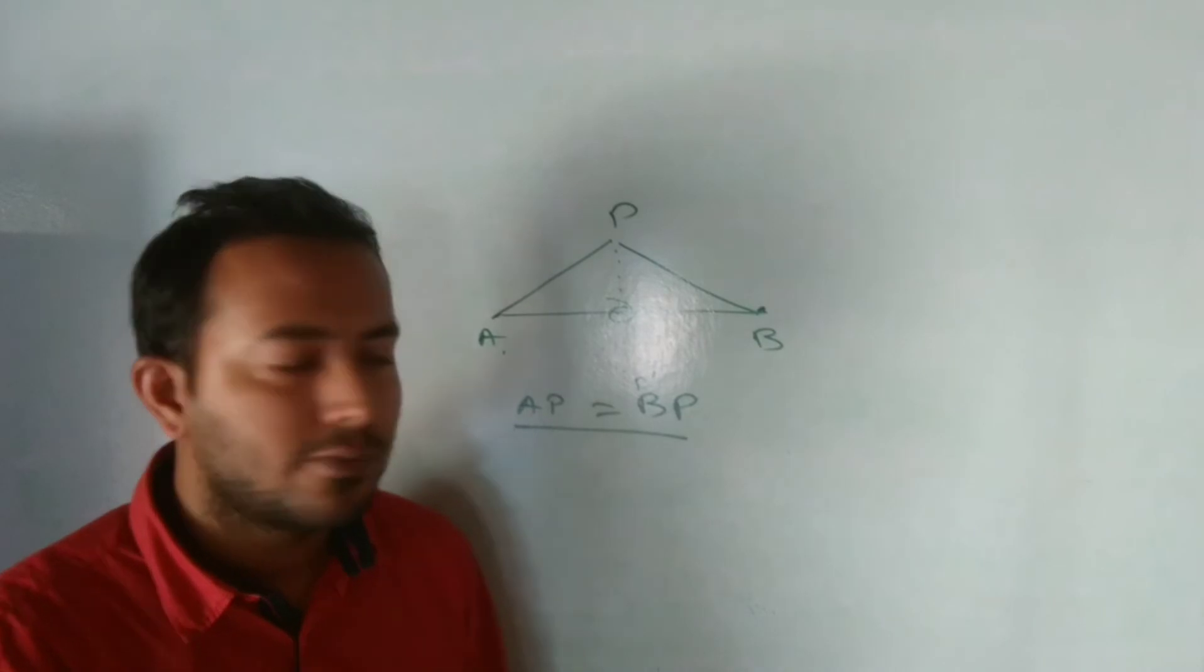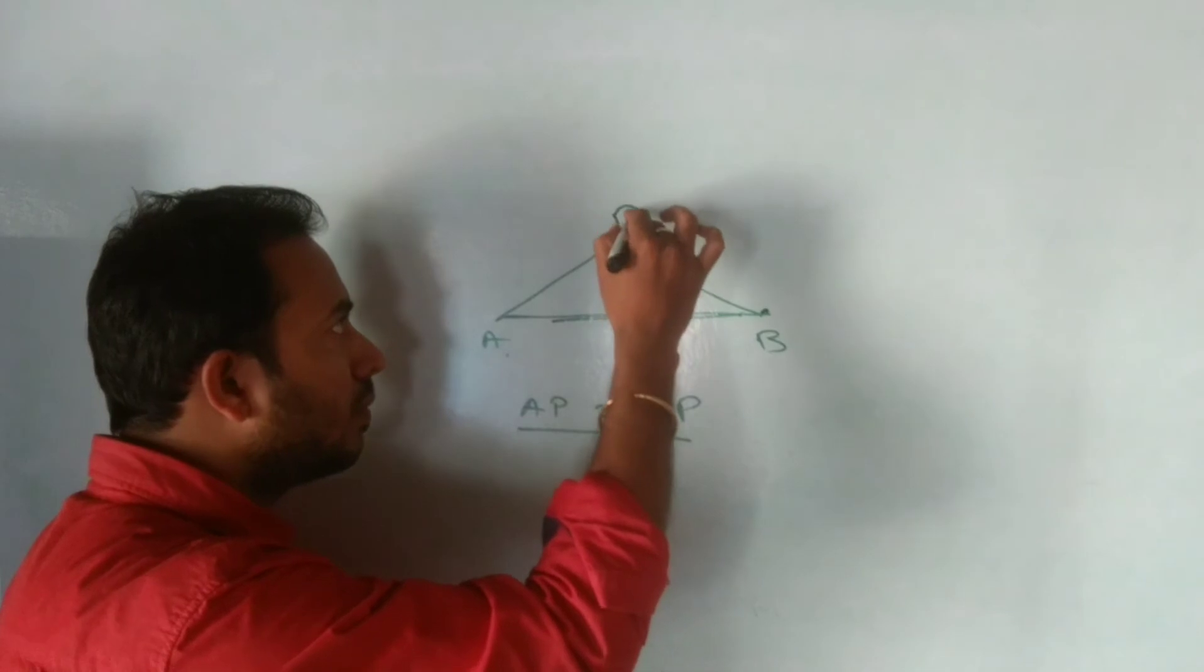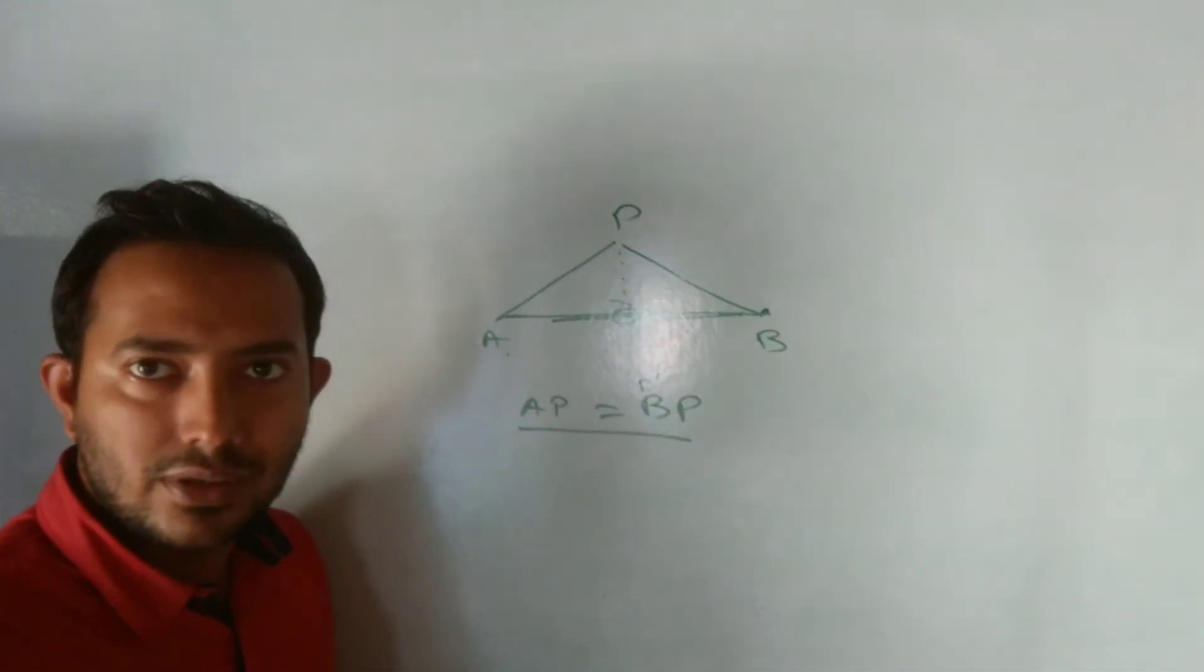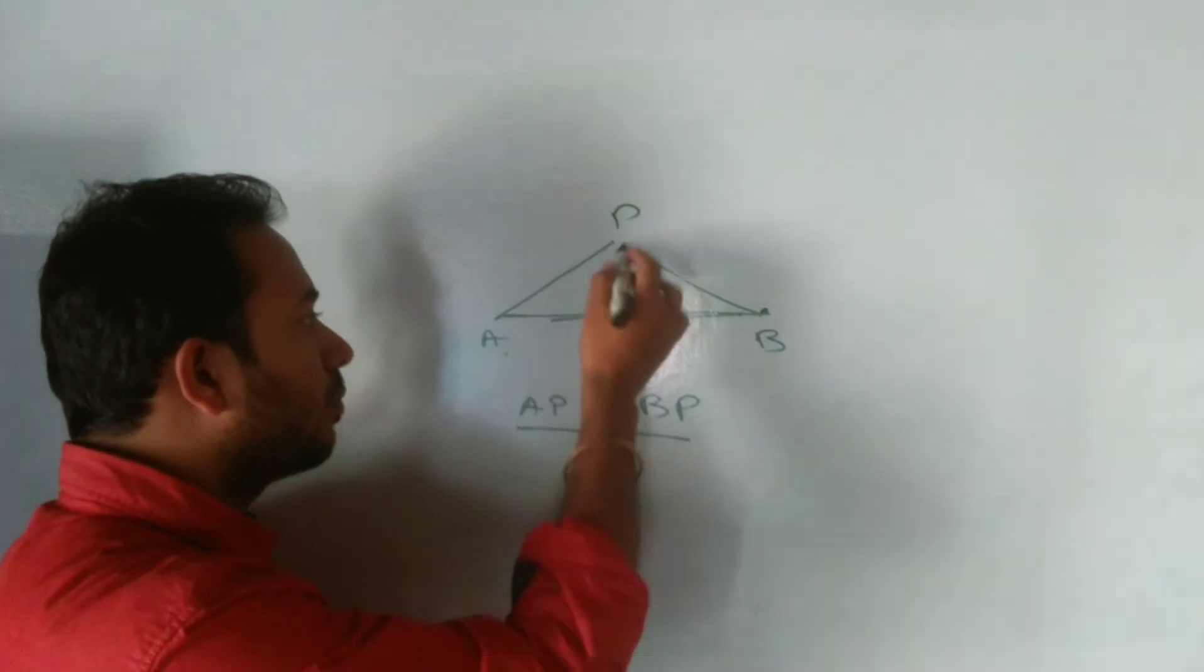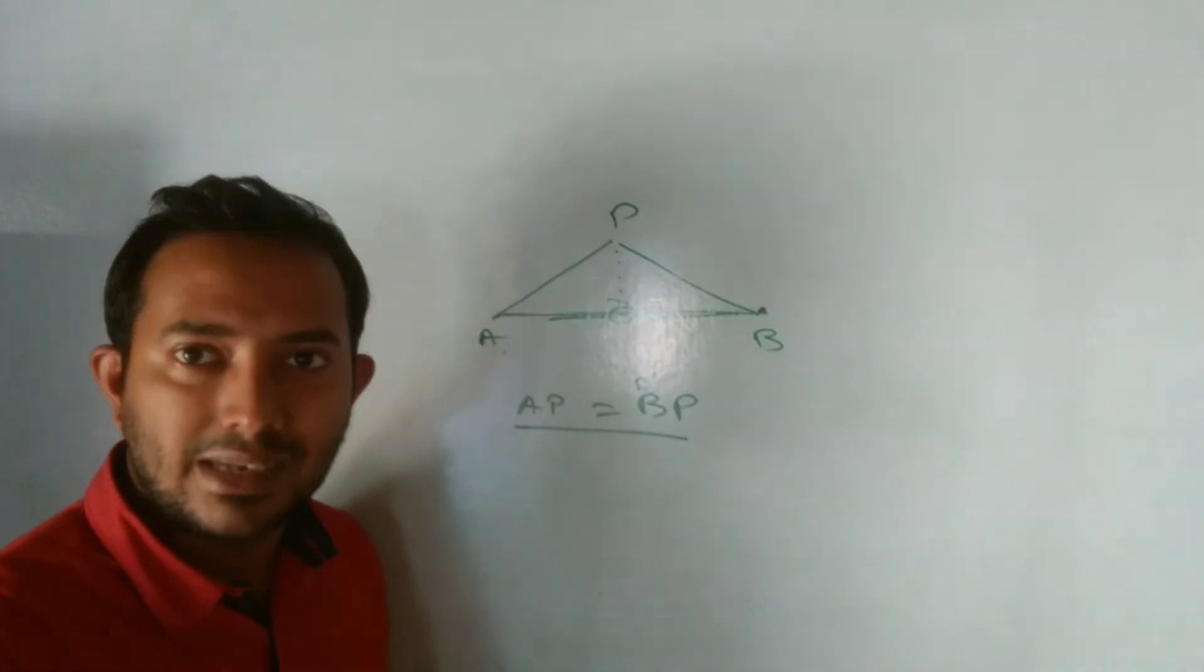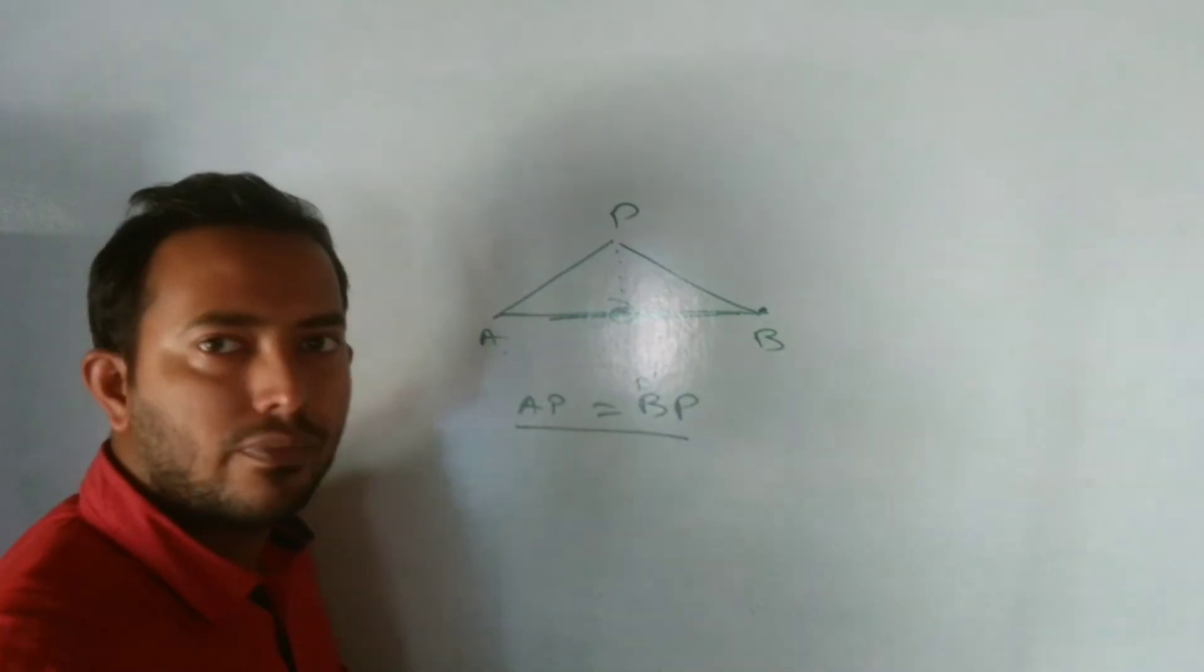So here is the difference: when there is a point which is in equidistance, then we will use distance formula. When your point lies on the line segment AB, then that equidistance becomes your midpoint of AB, we will use the midpoint formula.